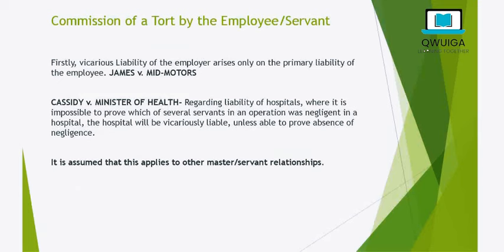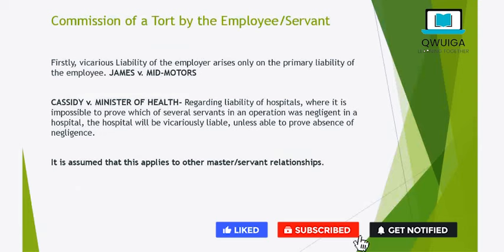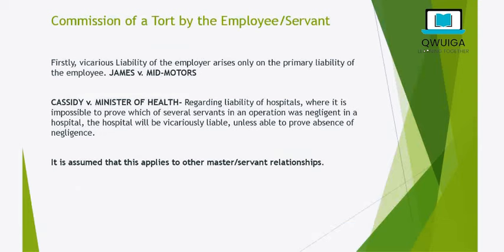The employee or servant must have committed a tort. As seen in Cassidy v Minister of Health, that case involved hospital liability where there are several employees responsible for an operation and it is hard to prove specifically who was negligent. It was held that the hospital would be vicariously liable unless the hospital is able to prove absence of negligence. This also generally applies to other employer-employee relationships where many employees work on a particular task and it is hard to pinpoint which one has been negligent — the employer will be vicariously liable unless able to prove no negligence.